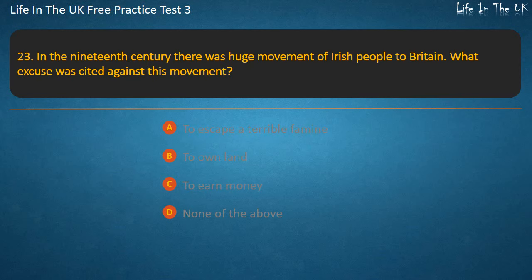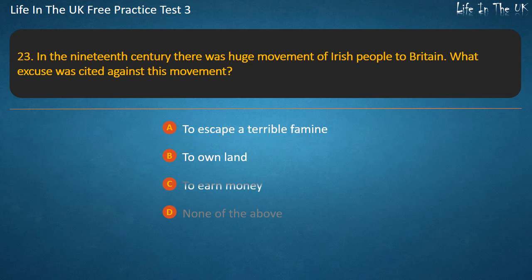Question 23. In the 19th century there was a huge movement of Irish people to Britain. What excuse was cited against this movement? To escape a terrible famine, To own land, To earn money, or None of the above? Answer: To escape a terrible famine.